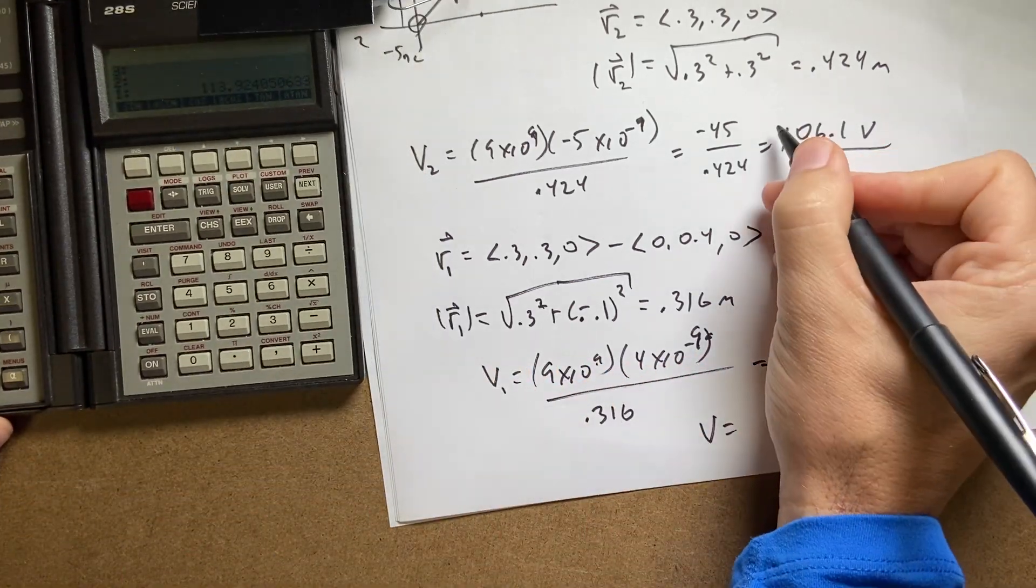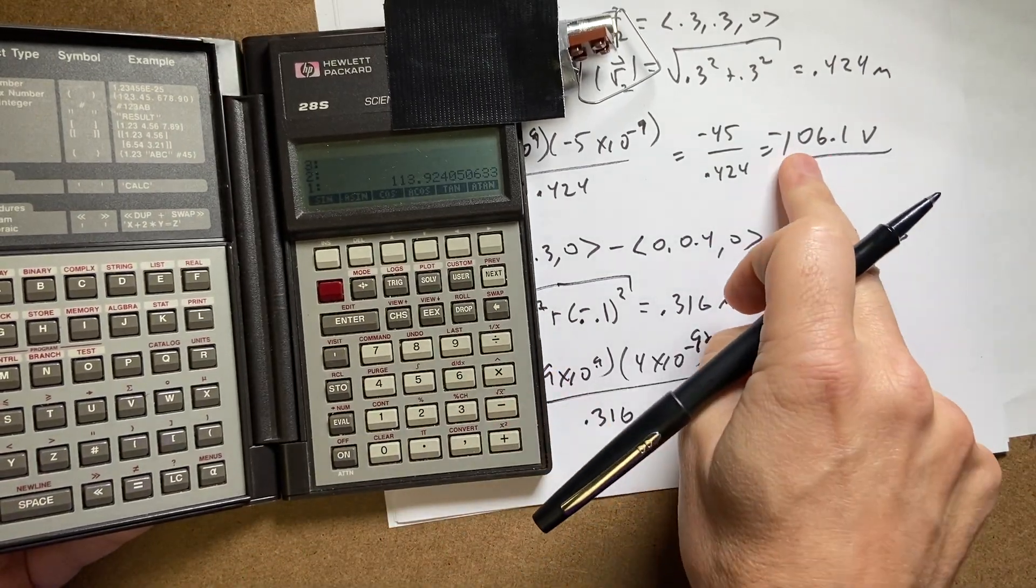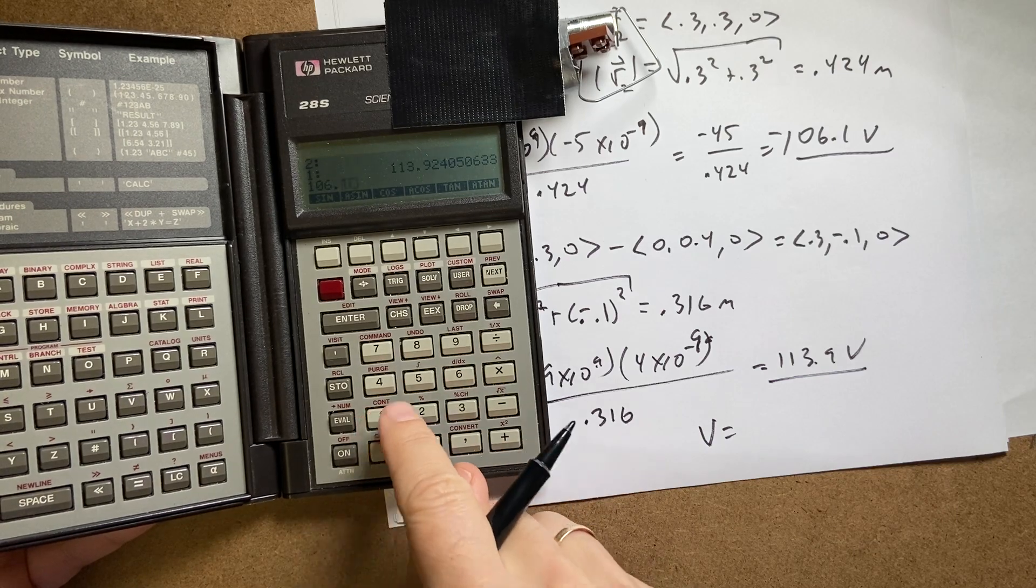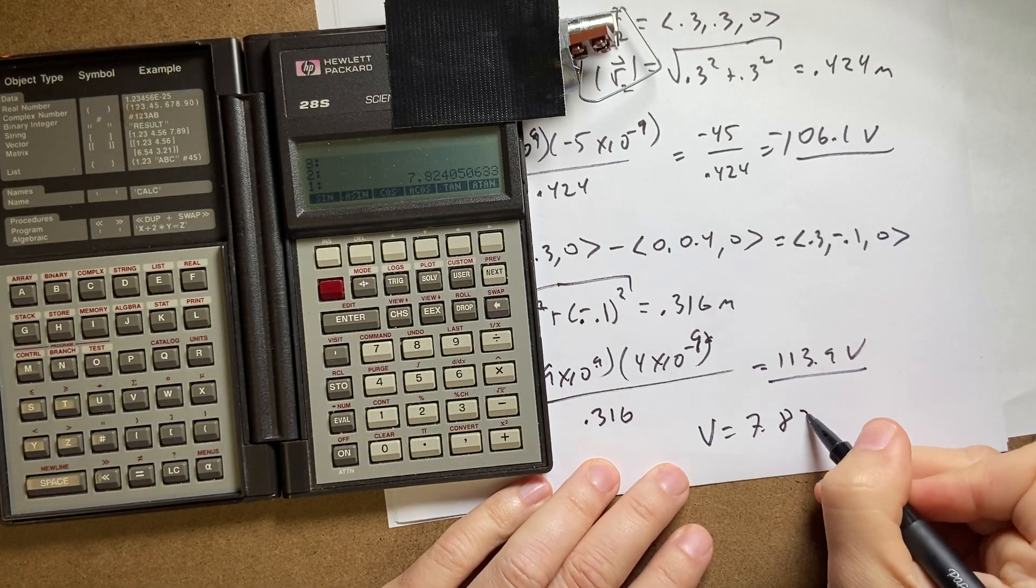Oh wait, that's negative. Okay, so now I get 113.9 minus 106.1, and I get 7.82 volts.